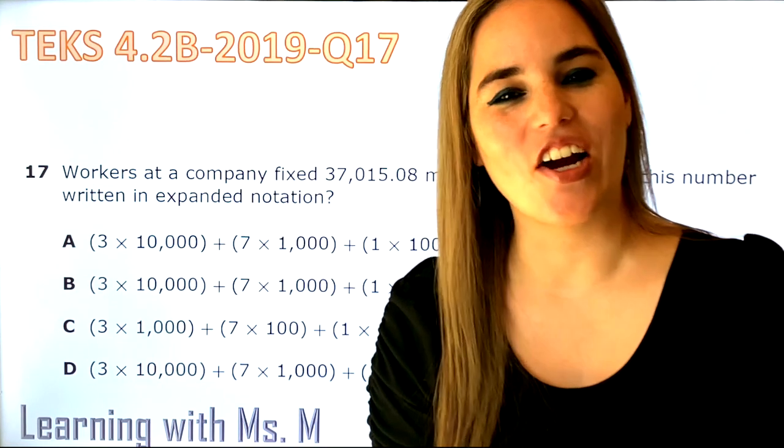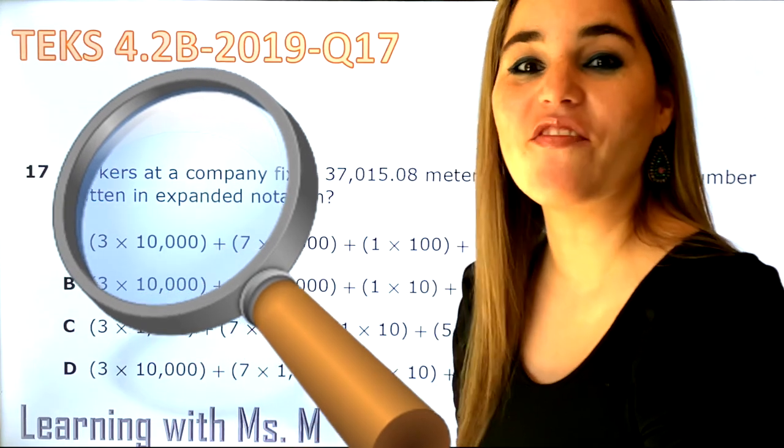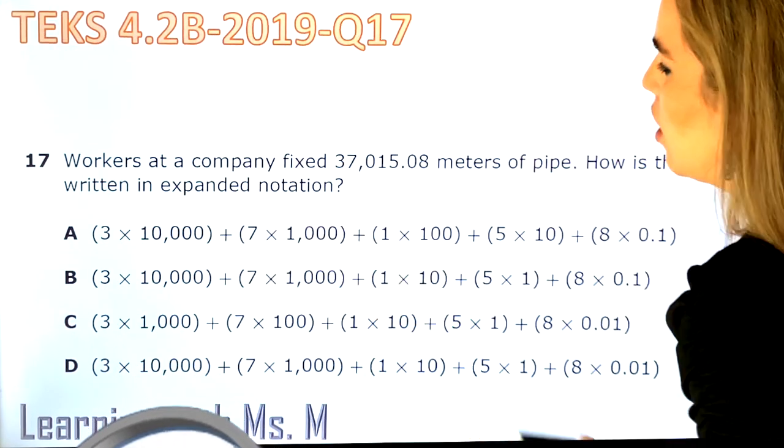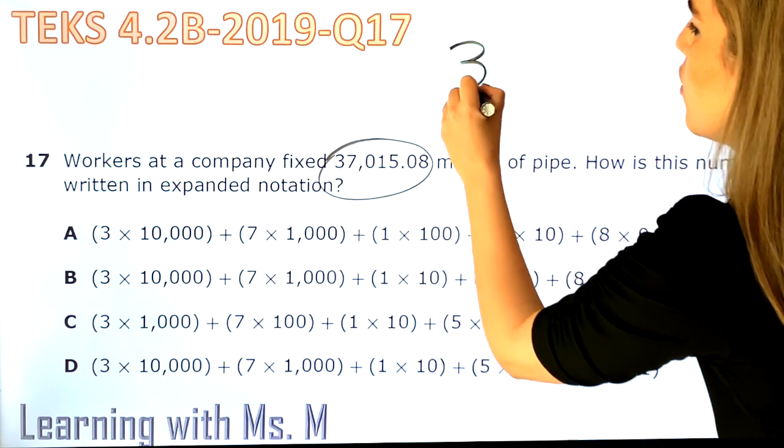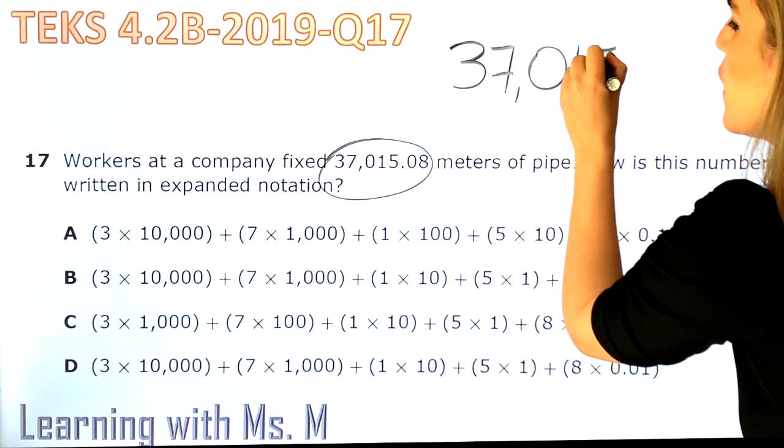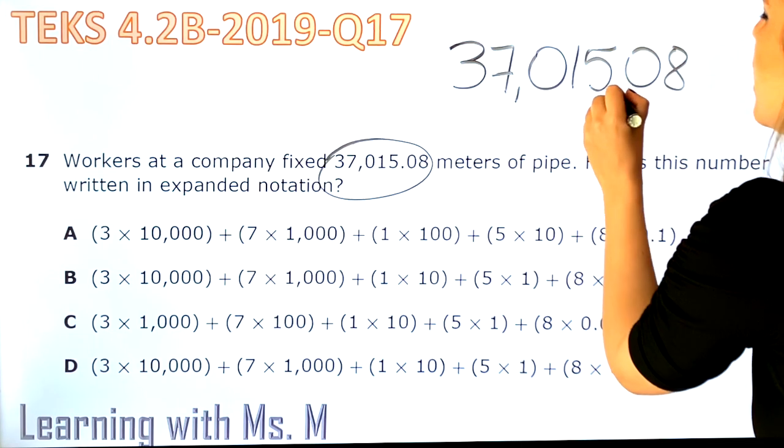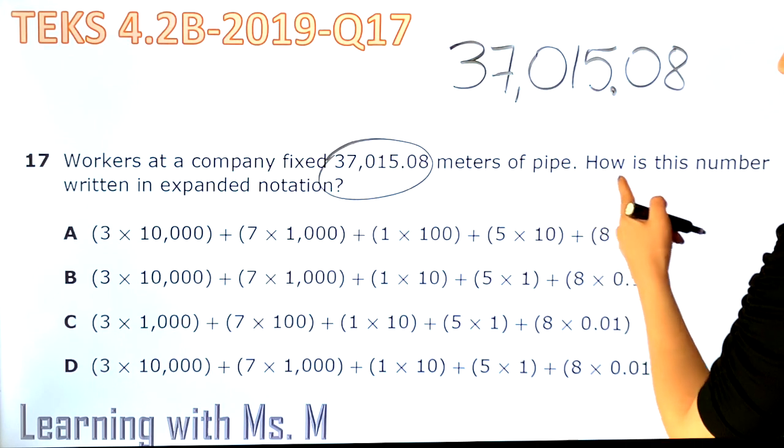So now let's start. Step one, find the keywords. Let's read very carefully. Workers at a company fixed—let's write this number larger so you can read it—37,015.08 meters of pipe. How is this number written in expanded notation?